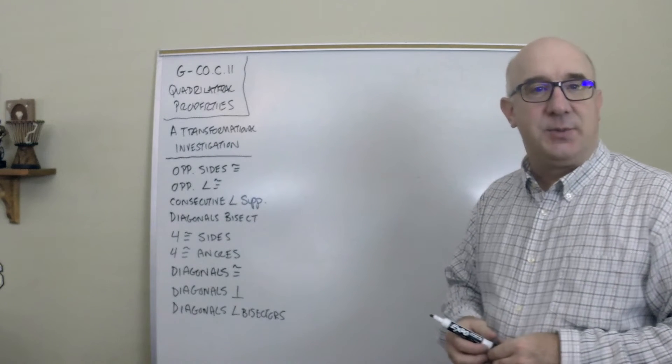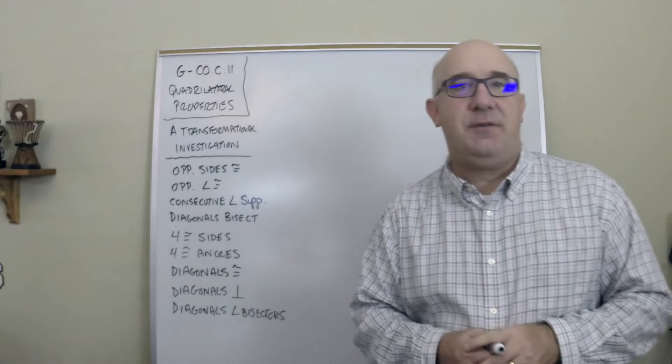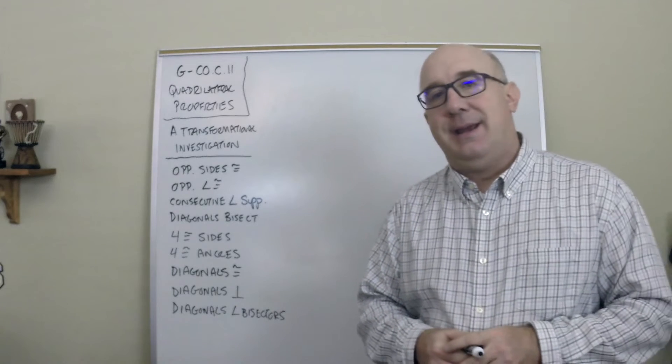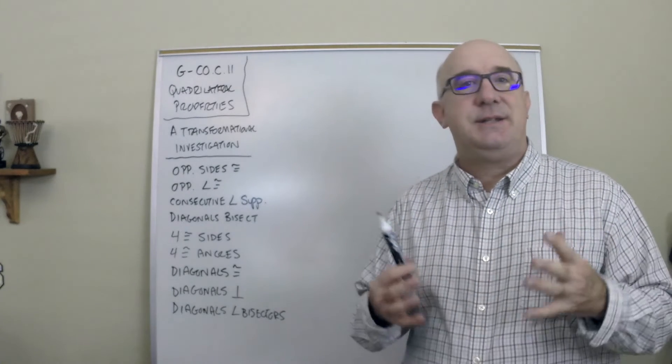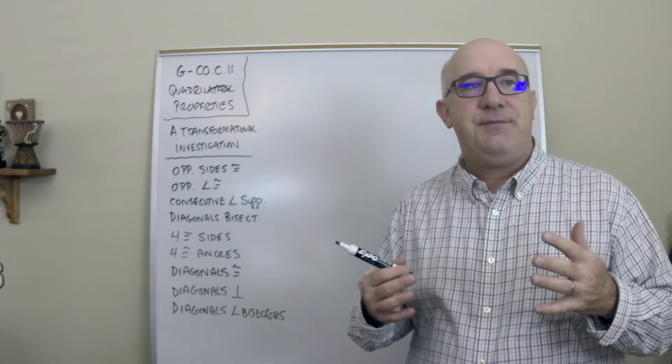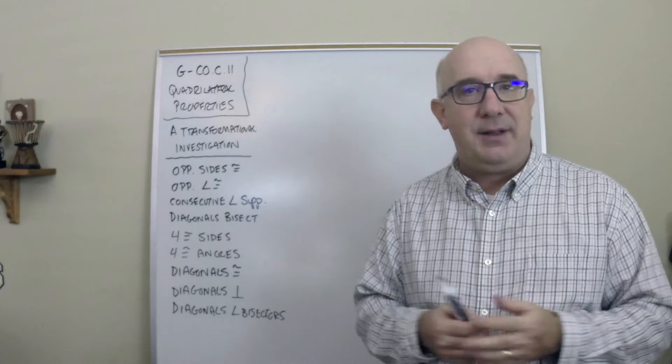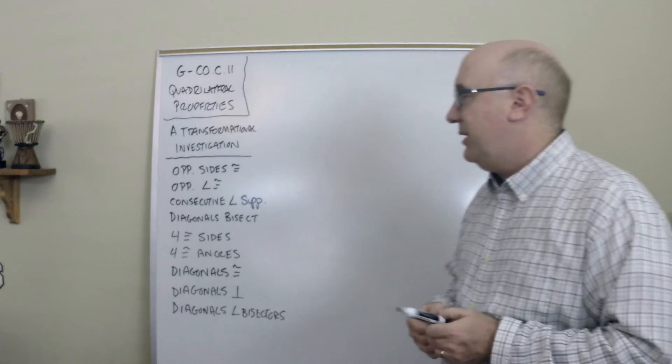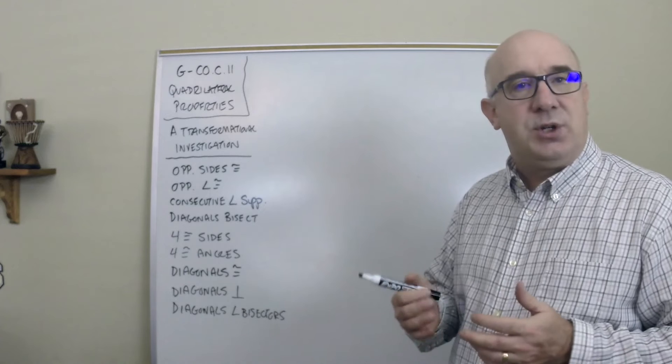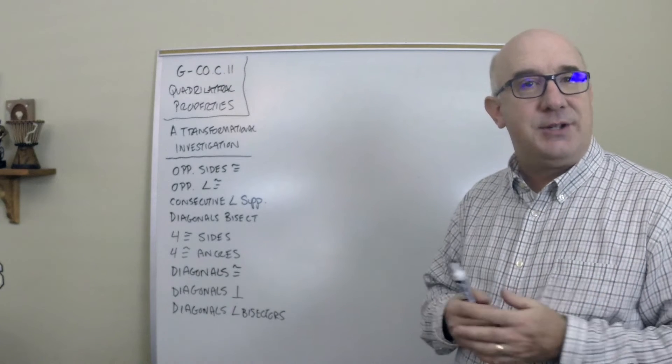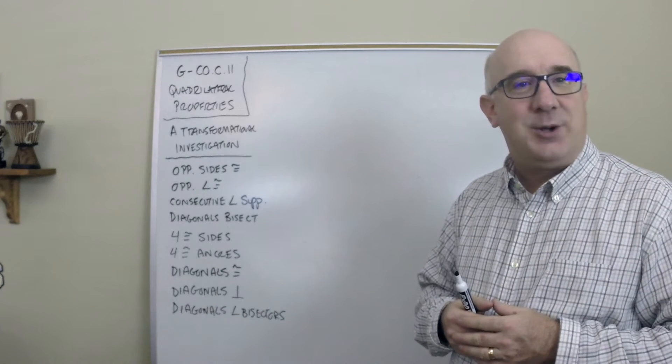GCOC 11 deals with all things about properties of quadrilaterals. The idea is that there are families of quadrilaterals that share commonalities, and so part of the investigation is to determine which properties are held by certain quadrilaterals.